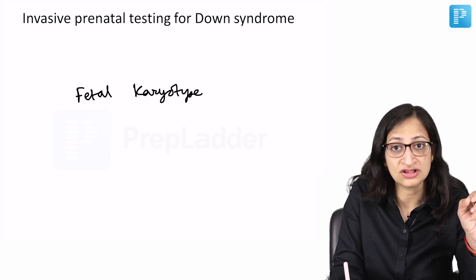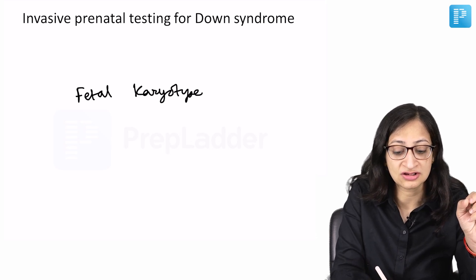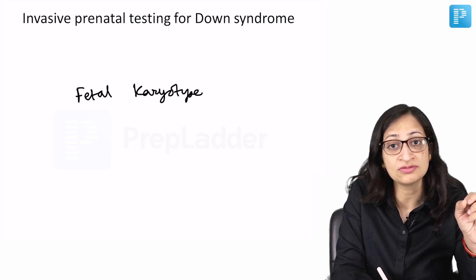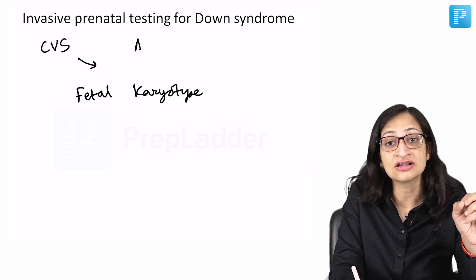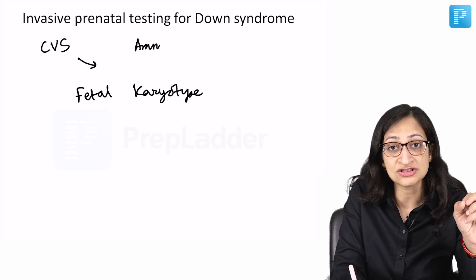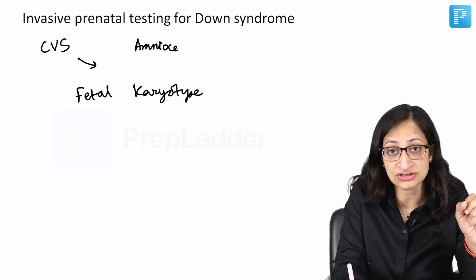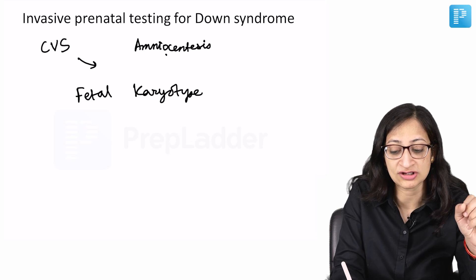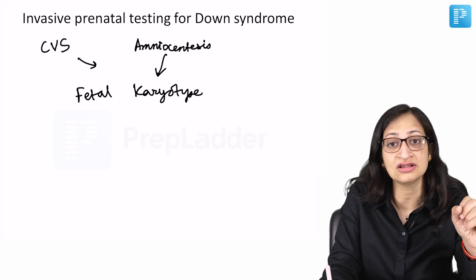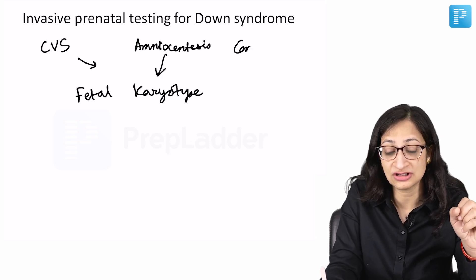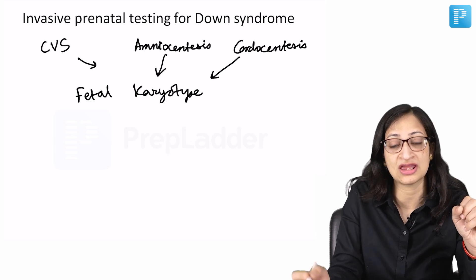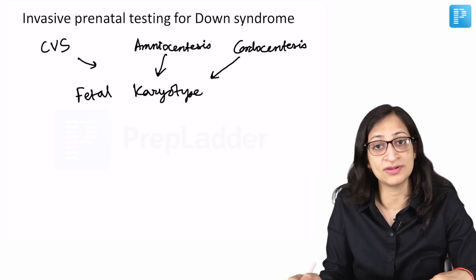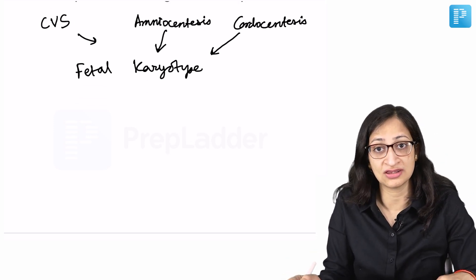For invasive prenatal testing, a needle is introduced into the uterus of the mother when she is pregnant and a fetal sample is taken and subjected to fetal karyotype. If the mother is coming early in pregnancy, chorionic villus sampling can be done. Later in pregnancy, amniocentesis can be done. Even later, cordocentesis can be done where a direct fetal blood sample is taken for karyotype analysis.